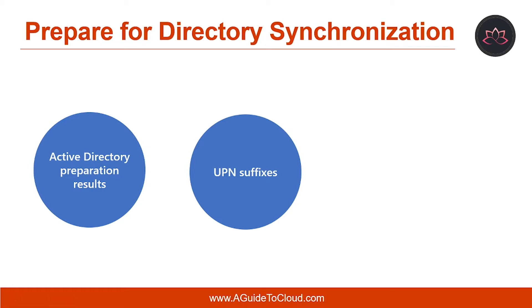If the UPN suffix must be changed in the on-premises Active Directory, it is important to check for any application that might be dependent on a specific UPN. If directory synchronization has already been deployed and the user's UPN for Microsoft 365 might not match the user's on-premises UPN defined in the Active Directory, this can occur if the user was assigned a Microsoft 365 subscription license before the domain was verified. To resolve this issue, PowerShell can be used to update users' UPN in Microsoft 365 to ensure that their Microsoft 365 UPN matches their corporate username and domain in your on-premises Active Directory.